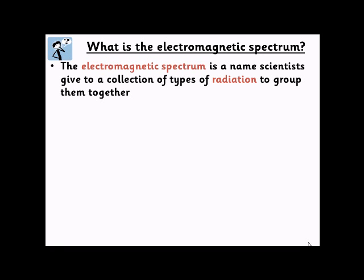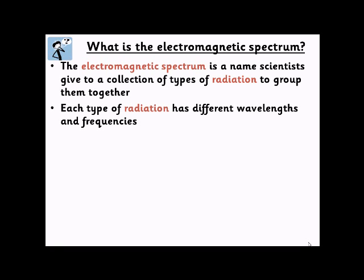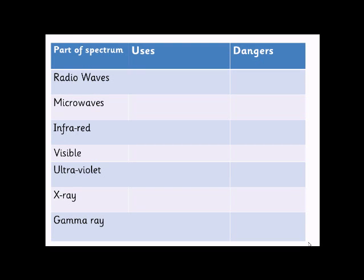The second set of waves we're going to look at is the electromagnetic spectrum — a group or collection of waves that describe radiation and how it transfers energy. Every type of radiation has a different wavelength and frequency, but they all travel at the same speed in a vacuum, which is the speed of light: 300 million metres per second.